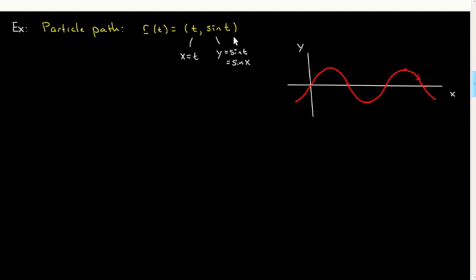Unless I say otherwise, t goes from minus infinity to plus infinity, so this curve goes off to infinity in both directions. Let's compute velocity. Velocity — I'm going to go ahead and do the differentiation for you. It's very easy to differentiate. We get 1 for the x component and the derivative of sine is cosine t.